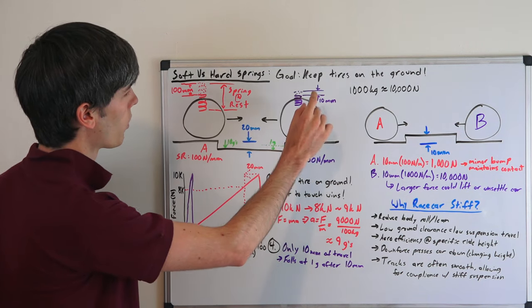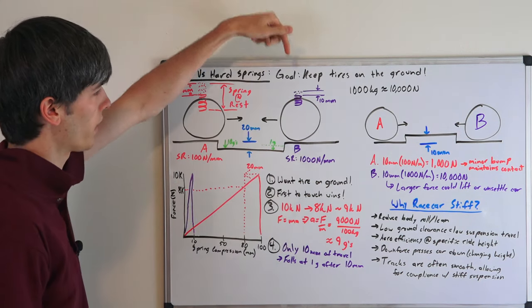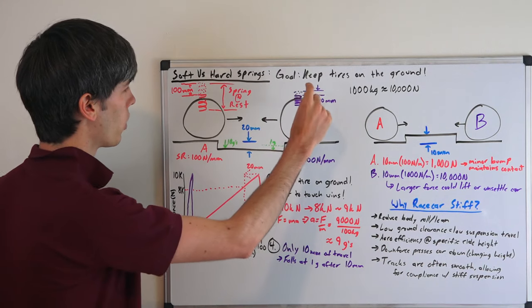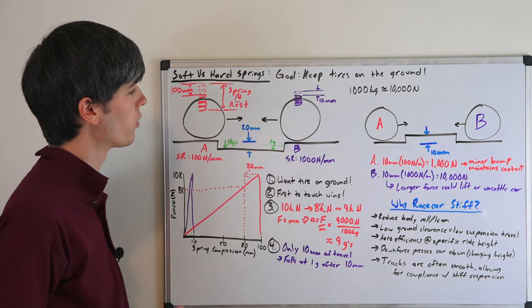10,000 divided by 100, 100 newtons per millimeter. This one on the right, spring B, basically what we have is we've placed that same load 10,000 newtons on this spring, but it's only compressed 10 millimeters. So a thousand newtons per millimeter.